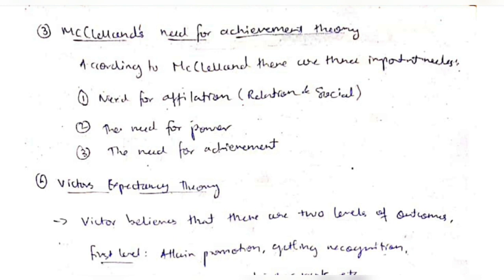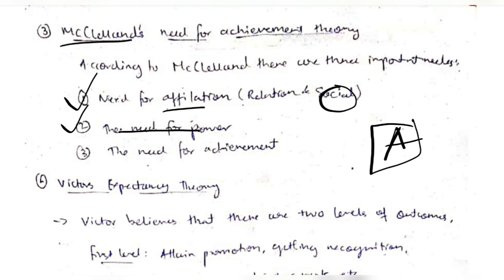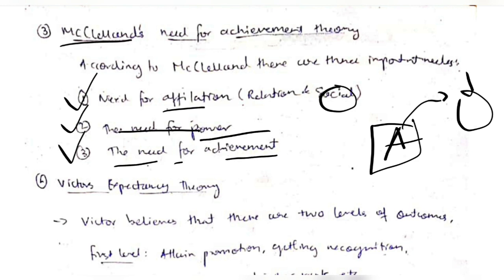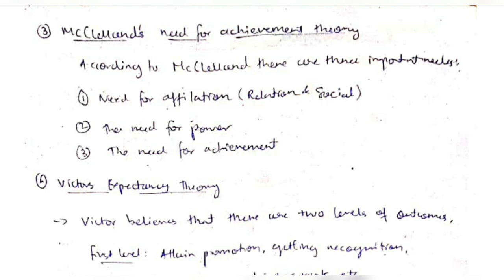The third theory is McClelland's Achievement Theory, which has three parts. First, the need for affiliation — having social recognition. Second, the need for power — if you complete a task you will be assigned as leader of the group. Third, the need for achievement — being recognized among people for being good at something.